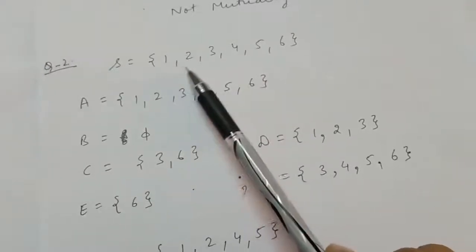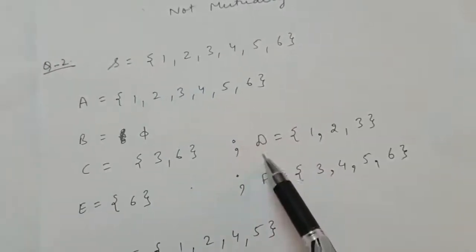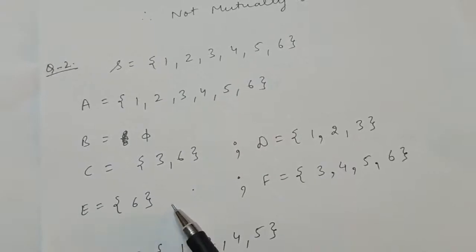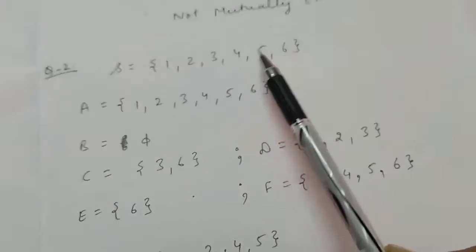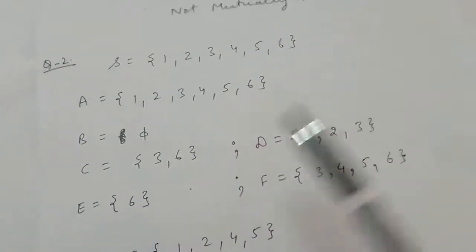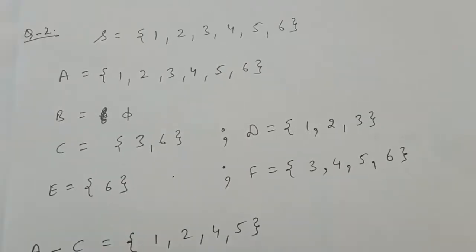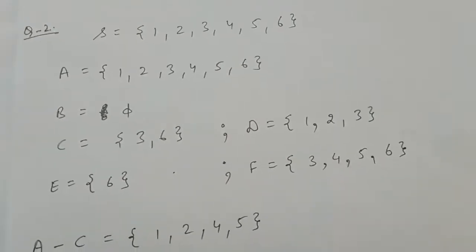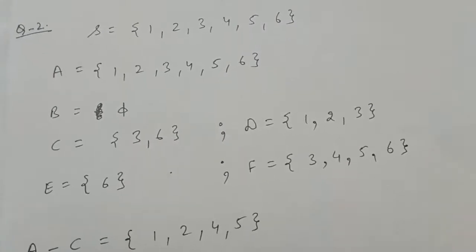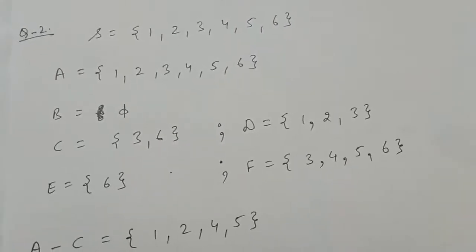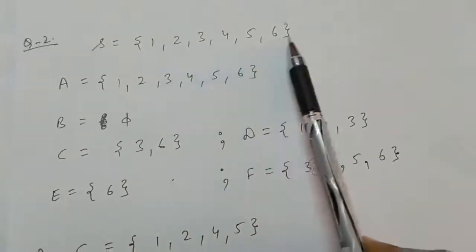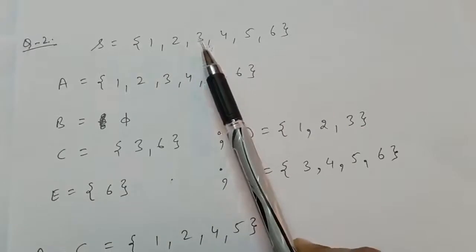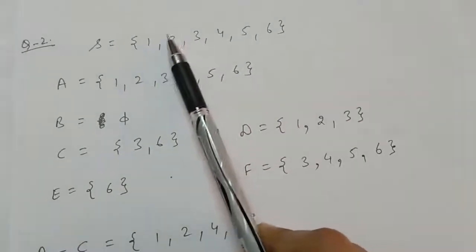Event E is an even number greater than 4, so greater than 4 and also even — that is 6 only. Event F is a number not less than 3 — that means the number can either be 3 or greater than 3, but it should not be less than 3, so 1 and 2 will not come and the rest will come.